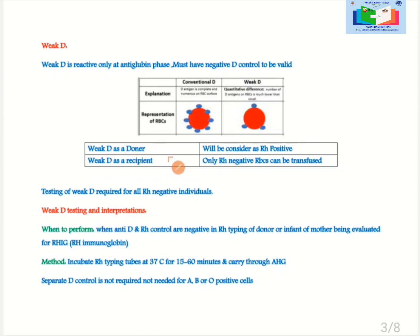Weak D as a donor will be considered as RH positive and weak D as a recipient will receive only RH negative red blood cells.